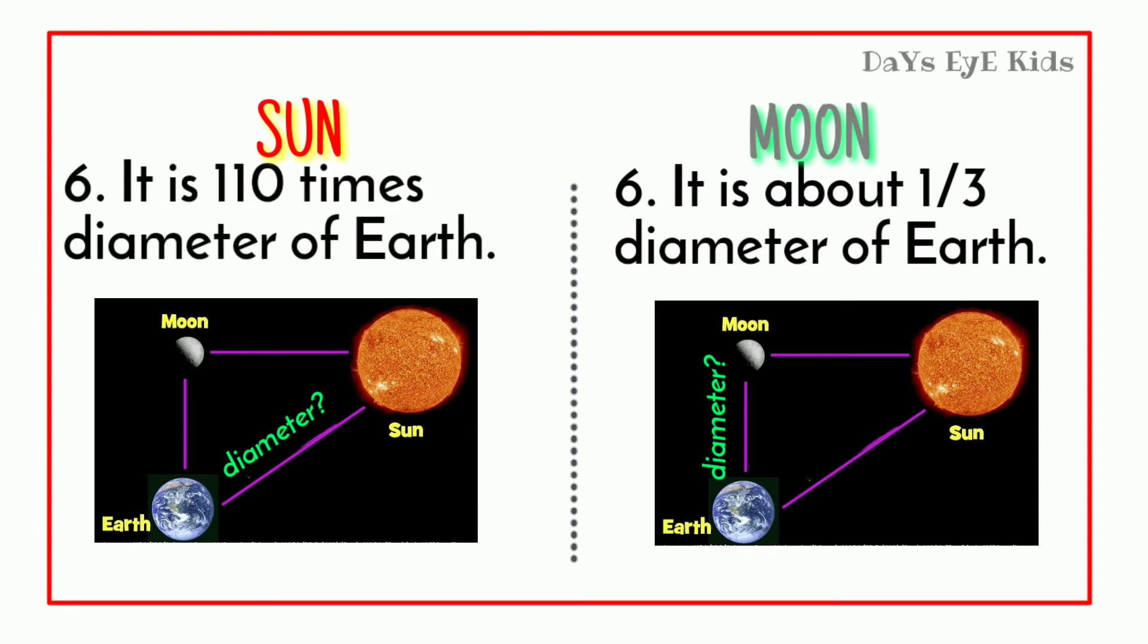The Sun is 110 times diameter of Earth. The Moon is about one-third diameter of Earth.